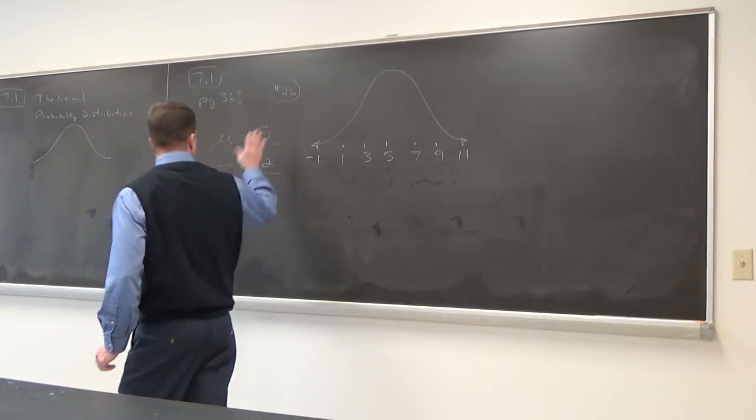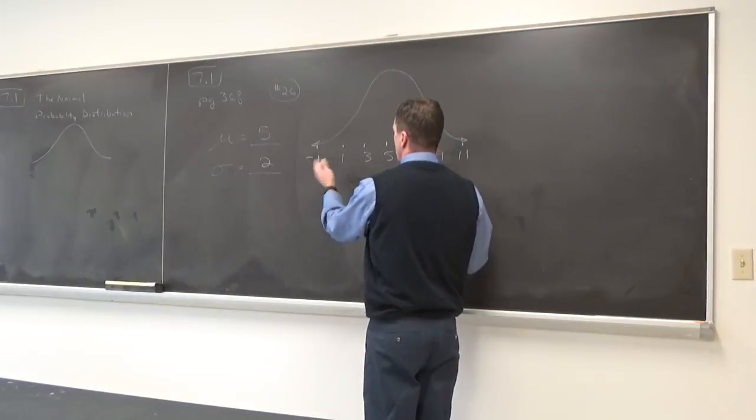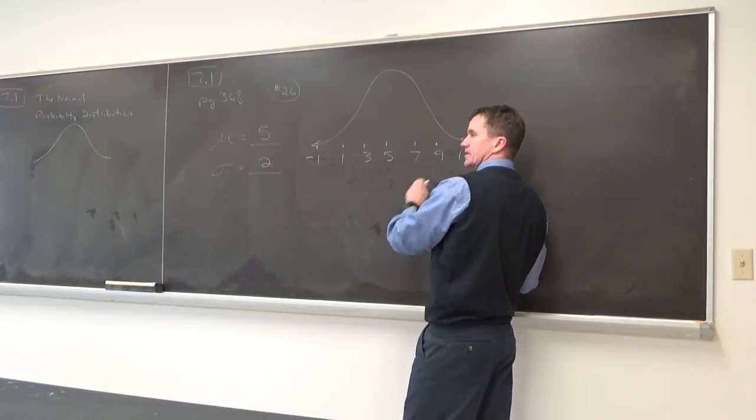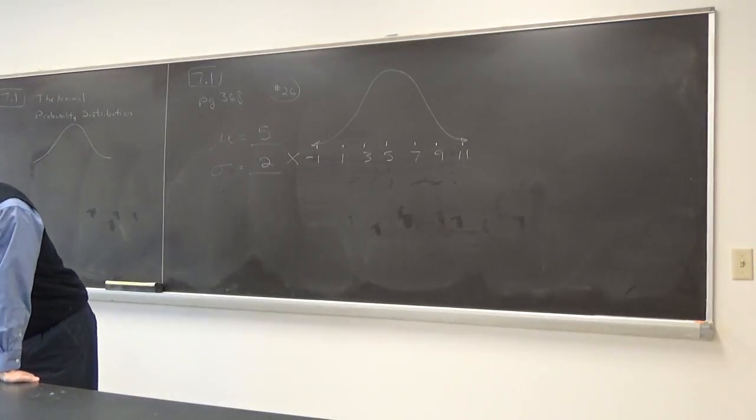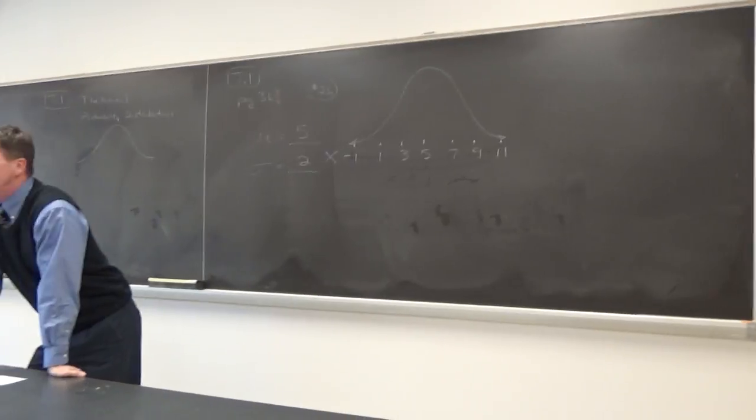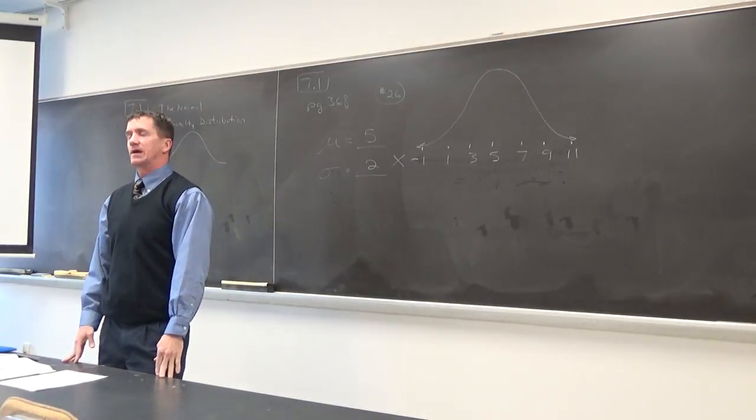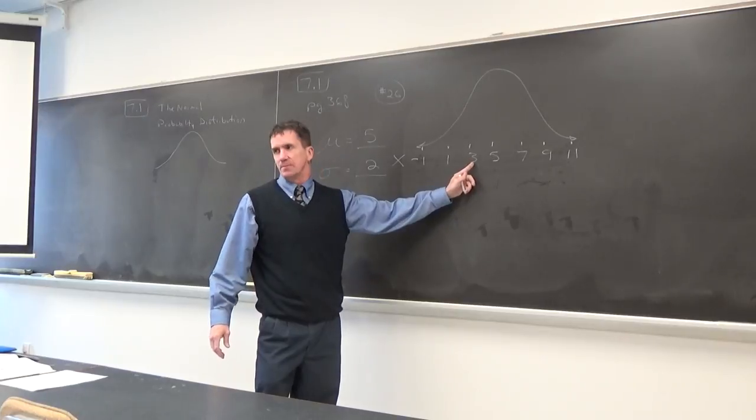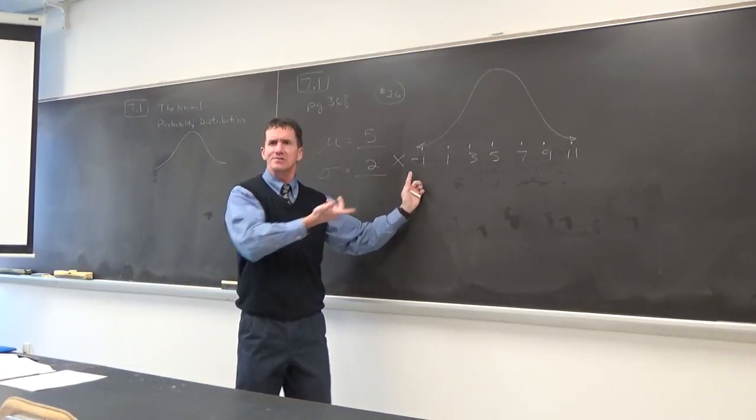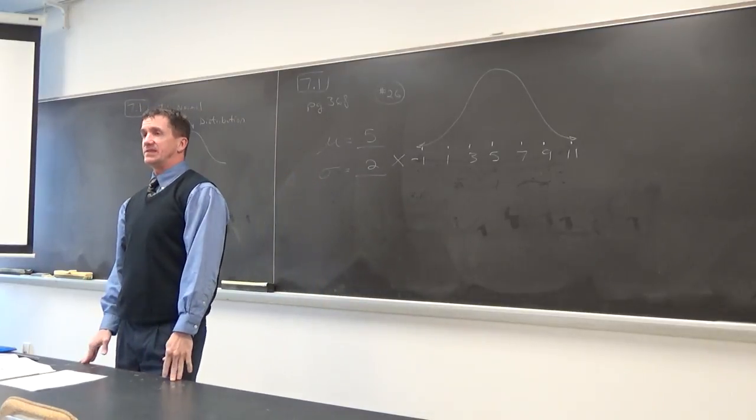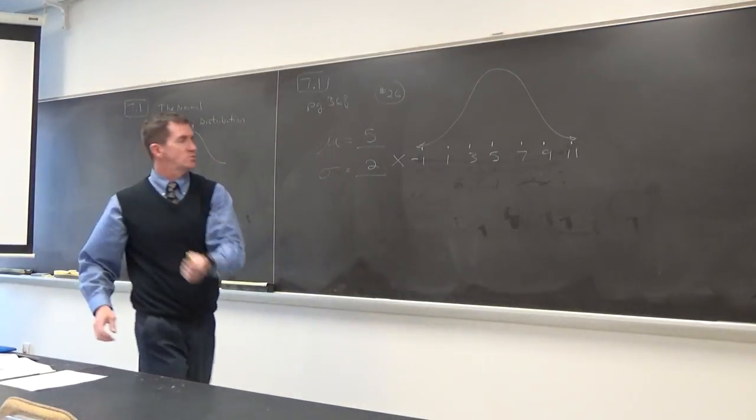Since this was so quick, I thought we'd extend this problem. I want to point out, what are these numbers? These numbers here, the negative one, the one, the three, the five, the seven, nine, eleven, they represent something. I'm going to put x. These are some x values.